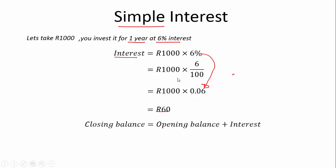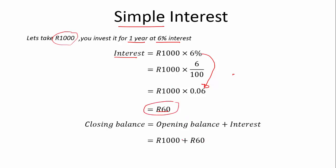The closing balance is how much we have at the end of the year. The opening balance is how much we started with, and the interest is how much we gained during the time period — in this case, 1 year. So our closing balance equals our 1,000 Rand that we started with plus our 60 Rand interest, which gives us 1,060 Rand. That is our closing balance.